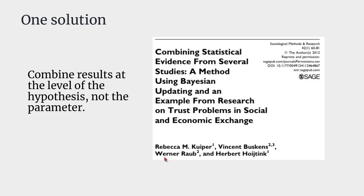So what can we do? One solution is based on a paper from 2012, and the idea is to combine results at the level of the hypothesis, not at the level of the parameter like a normal meta-analysis would do. That paper did include some R code, but it wasn't very user friendly, so myself and a colleague rewrote all of the code from scratch, made it into nice functions and an R package with an easier user interface. All of the intellectual work in terms of methodology came from that paper.